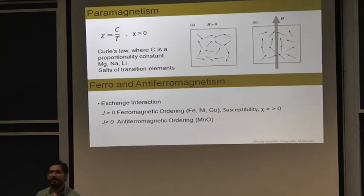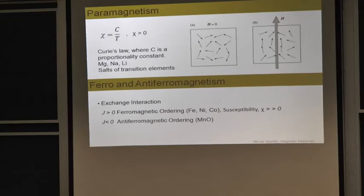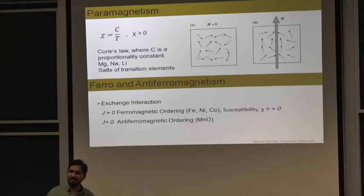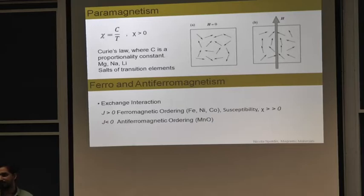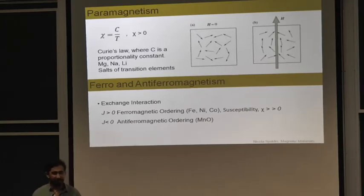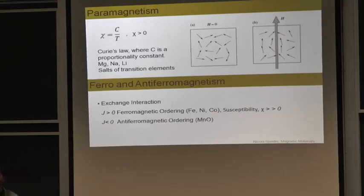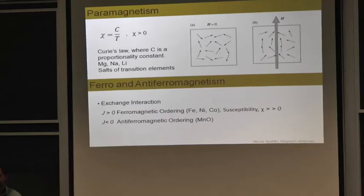Next, talking about ferromagnetism and antiferromagnetism. The origin of ferromagnetism and antiferromagnetism lies in the exchange interaction. The system is strongly coupled. When the exchange constant J is greater than zero, the system will prefer to be oriented in a parallel spin configuration. When J is less than zero, the system will prefer an anti-parallel spin configuration. Examples of ferromagnetic materials are iron, nickel, and cobalt. Antiferromagnetism was first observed in manganese oxide.